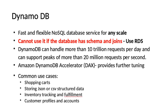Amazon DynamoDB is a fast and flexible NoSQL database service offered by AWS. DynamoDB cannot be used if the database has schemas and joins. DynamoDB can support up to 20 million requests per second and 10 trillion requests per day. Amazon DynamoDB Accelerator is an add-on service used to tune DynamoDB for better performance. Common use cases include database for shopping carts, storing JSON, CSV, or other structured data files, inventory tracking and fulfillment applications, and customer profiles and accounts databases.